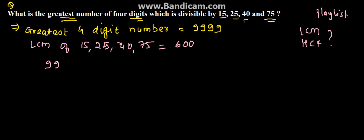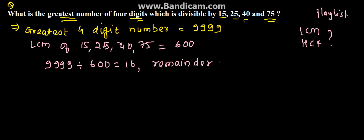Now, if we divide 9999 by 600, we get 16 and the remainder will be 399. So 600 multiplied by 16 gives us 9600, and 9999 minus 9600 gives a remainder of 399.